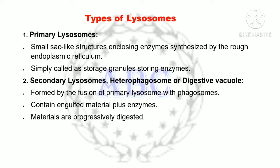There are four types of lysosomes. The first type is primary lysosomes. These are small satellite structures enclosing enzymes synthesized by the rough endoplasmic reticulum, simply called storage granules or storing enzymes.